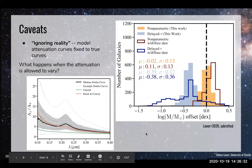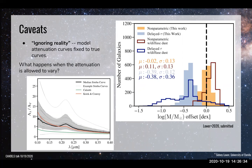Something I've swept under the rug until now is that the results shown have been in the absence of any confusion or degeneracy with dust. In the SED model, I've fixed the attenuation to match the forward model. So these quantities have actually been uncertainties in the absence of dust attenuation, and we know that has to play an important part in SED modeling.